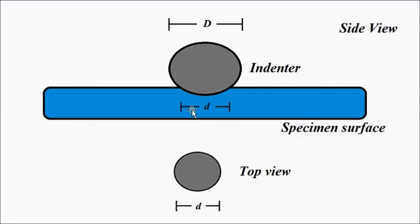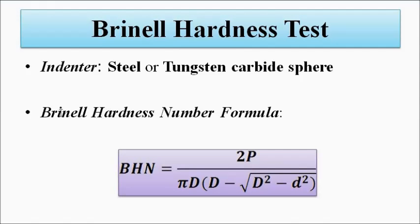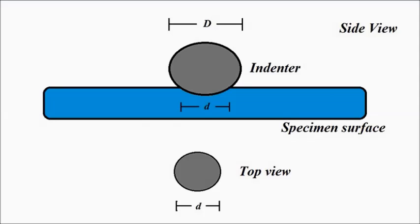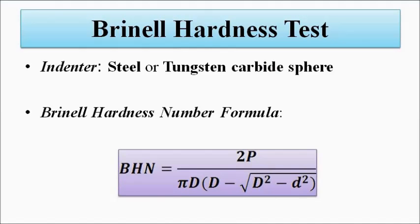The penetration formed, from the top view, looks like a circle. The Brinell hardness number is calculated as: BHN = 2P / (π × D × (D − √(D² − d²))), where P is the load applied, D is the diameter of the spherical indenter, and d is the diameter of the circular indentation formed from the top view. Accurate and precise measurements are needed to obtain an accurate Brinell hardness number.